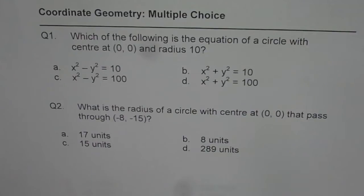Question number 2 is, what is the radius of a circle with center at 0, 0 that passed through minus 8, minus 15? So in each video, I will give you some time so that you can pause the video, answer the question and then look into my suggestions.